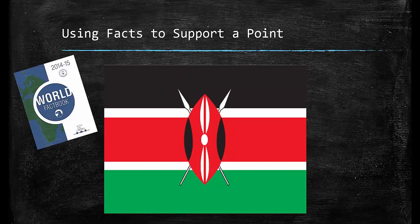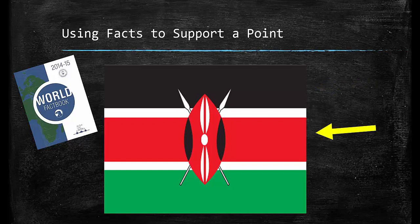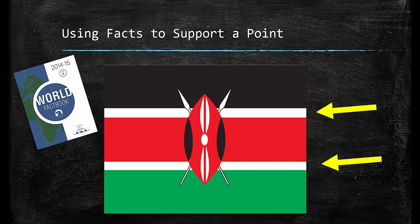We can find evidence about the flag from the CIA Factbook. It states: the black symbolizes the majority population, the red the blood shed in the struggle for freedom, the green stands for natural wealth, and the white for peace.